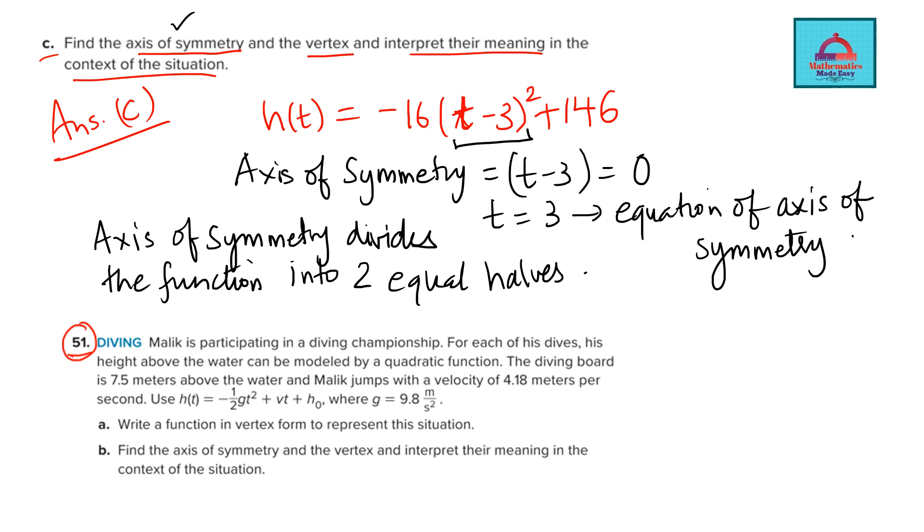So I will write here now. So axis of symmetry divides the function into two equal parts. So because this is happening, the firework will be at the same height after 5 seconds. After 5 seconds.